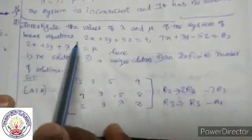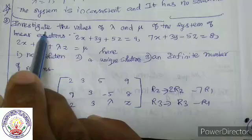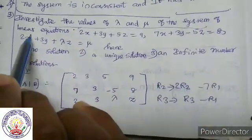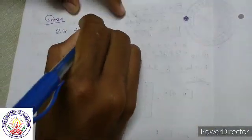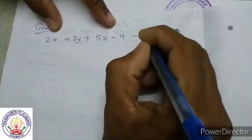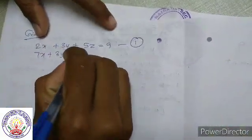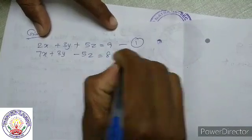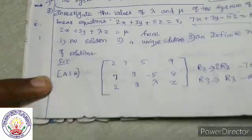Question number 3: investigate for what values of lambda and mu the following system of 3 linear equations has solutions. First equation: 2x plus 3y plus 5z equal to 9. Second equation: 7x plus 3y minus 5z is equal to 8. Third equation: 2x plus 3y plus lambda z is equal to mu.